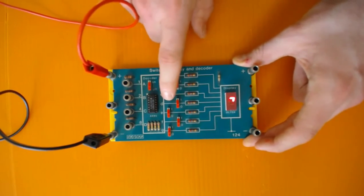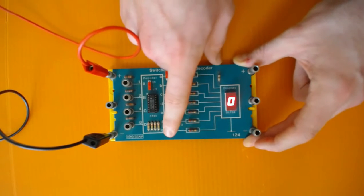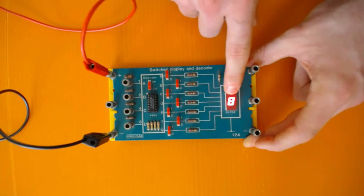Switching a few of them on, you can see that each corresponds to a little line on the display.